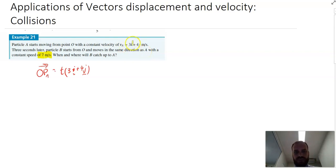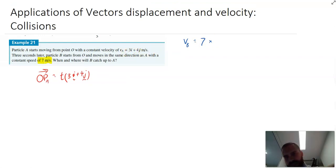So we can't just use the velocity vector because it has a different velocity. Same direction though. So how can I come up with the velocity vector for B? We can say that VB is going to be equal to the constant speed 7 times the unit vector of 3i plus 4j. So the unit vector of VA.